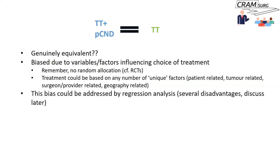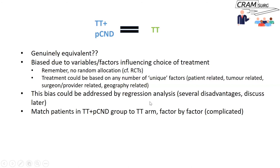This bias has traditionally been addressed by regression analysis and multivariable analysis. However, there are downsides to that approach. You could also try matching patients in the two arms factor by factor, but if you have a dozen different confounding variables, the matching process becomes almost impossible.